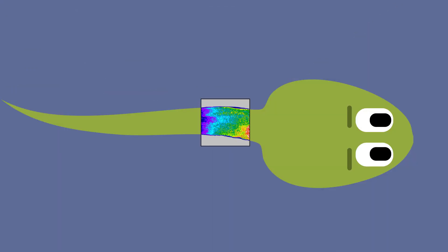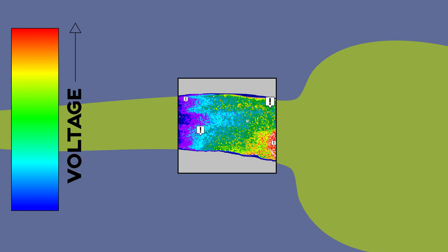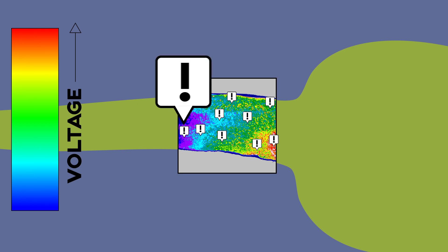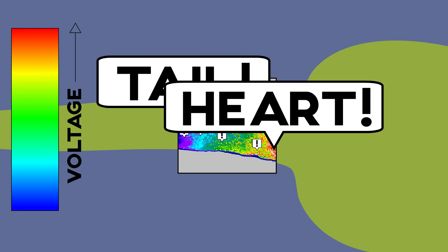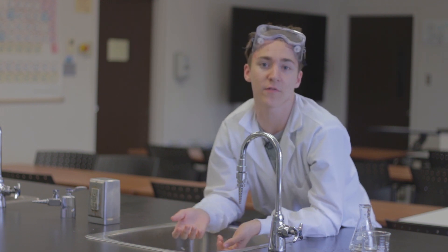Here's a tadpole stained with a voltage-sensitive dye. The cells are telling each other what to make and where to make it. The lower voltage areas might be signaling that a tail has to be there, and the higher voltage areas might be where a heart is being made. These electric patterns represent and store structures in the same way that the brain stores memories.